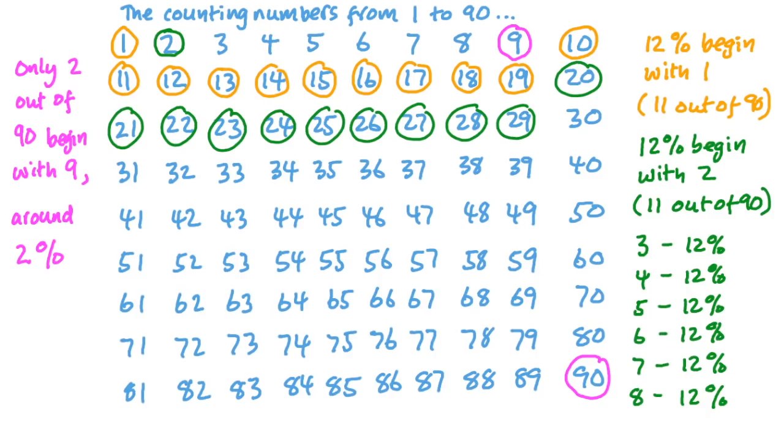If we restricted ourselves to just looking at the counting numbers between 1 and 90, then about 12% begin with a 1, 12% with a 2, and so on. But only two of them, about 2%, begin with a 9. The distribution of first digits is uniform apart from nines, and Benford's law doesn't apply.